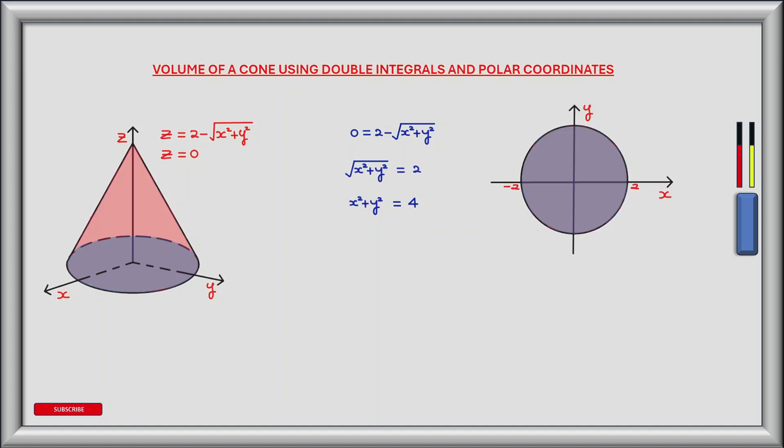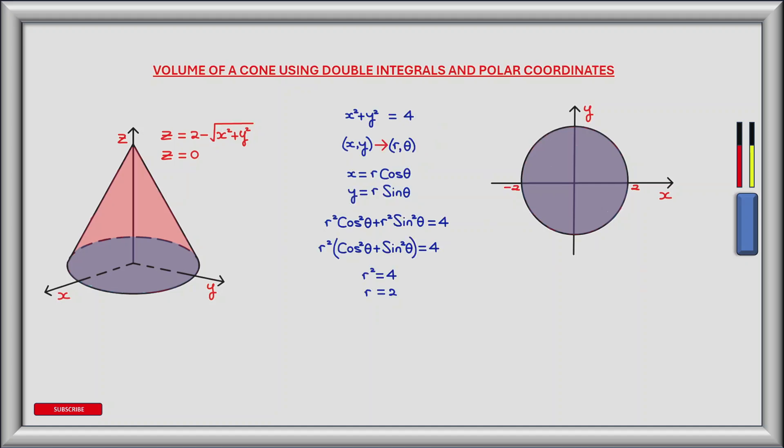Sketching the region in the xy plane we see that it's a circle with a radius of 2 centered at the origin where x and y are both equal to 0. The next step is to convert the region given by x squared plus y squared equals 4 from Cartesian to polar coordinates.